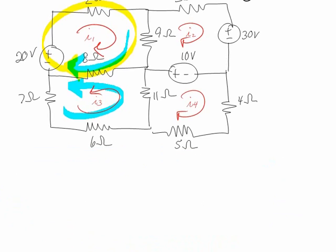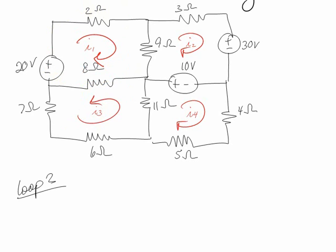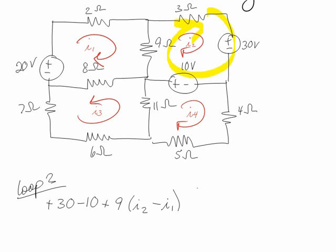Alright, for loop 2, wherever I want to start is fine. I'll start on the 30 volts. Now whenever I get to the 10, that's minus 10 volts. Now a lot of times students want to multiply that times current, but that's silly because voltage times current is power. This is already a voltage. The only reason we're multiplying the resistances times currents is because current times resistance gives us voltage for KVL. In this case we don't want to multiply voltage times anything because it's already voltage. Then plus 9, and I2 is going with me and I1 is going against me, and my 3 — I forgot my 3 — plus 3I2 equals 0. So I've got negative 9I1 plus 12I2, and that equals minus 20.